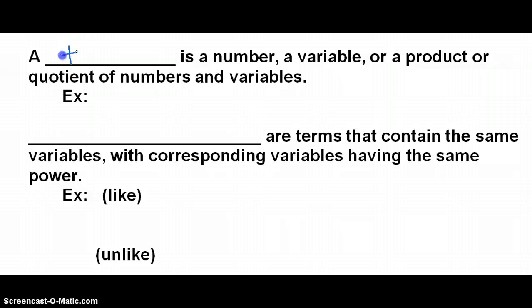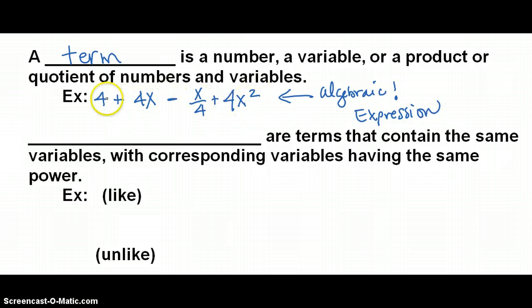On the back, we have some blanks we need to fill in. The first word is a term. A term is a number, a variable, or a product, or quotient of numbers and variables. So, for example, 4 is a term. 4x is a term. x over 4 is a term. x squared is a term. So, it's 4x squared. So, if I put addition or subtraction signs in between, I make one big long expression. This is called an algebraic expression. What makes it algebraic? I hope you know the answer to that question. This algebraic expression has 1, 2, 3, 4 terms in this example. 4 terms in that one example.